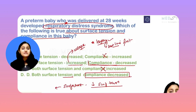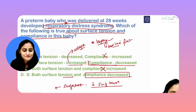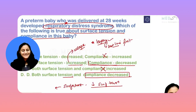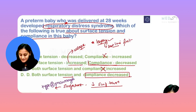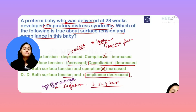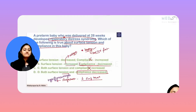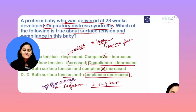What pneumocytes produce the surfactant? It is type 2 pneumocytes. This is another commonly asked question — type 2 pneumocytes are the ones that produce surfactant.